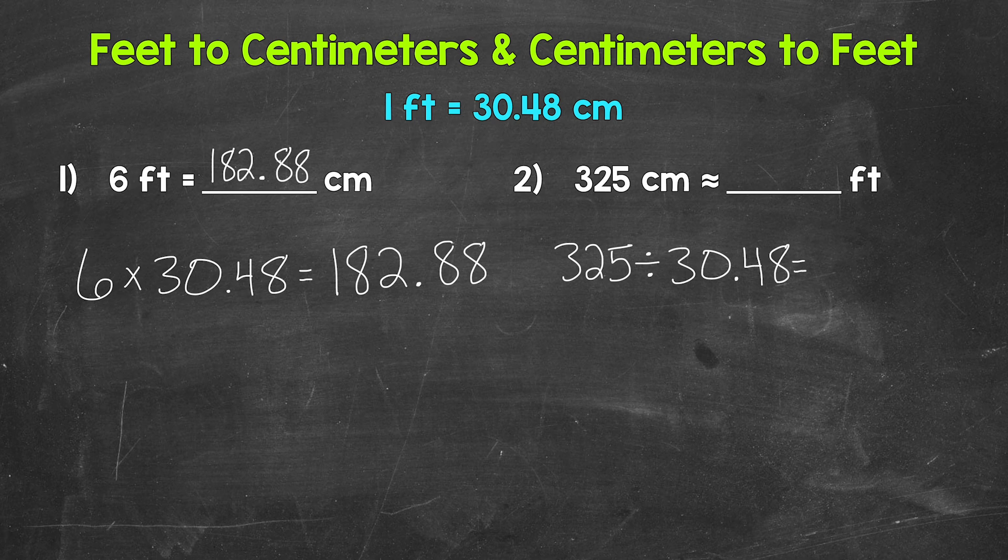When we convert from centimeters to feet, we divide by 30.48. Now 325 divided by 30.48 gives us 10.662 and that decimal continues on.